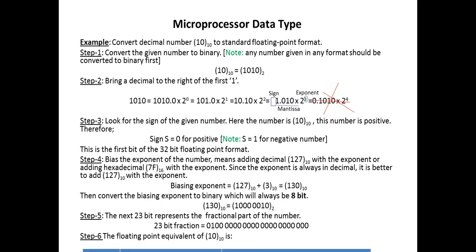This is the microprocessor data type. You can see here the math. Like (10)₁₀, first what we are doing: convert that given number to the binary. We have to convert this 10 into the binary. Then what you have to do is convert this in this format, then putting the decimal point afterward, bring a decimal to the right of the first one.